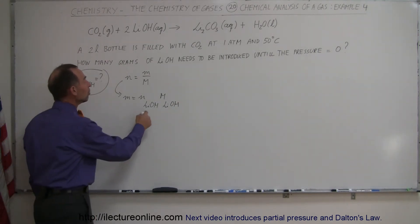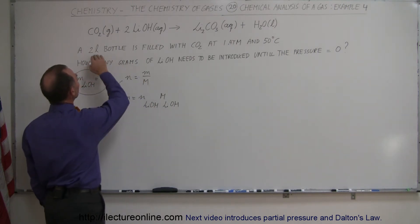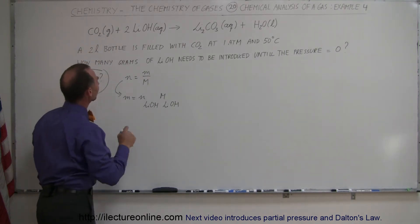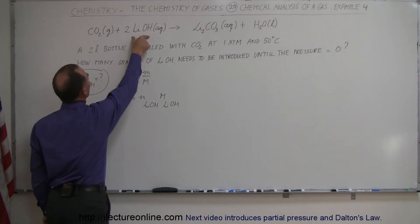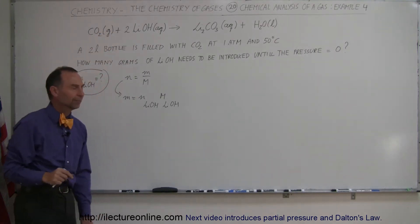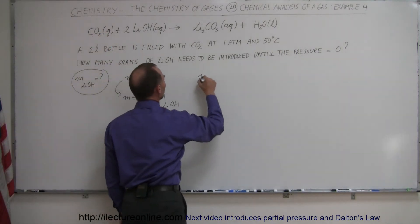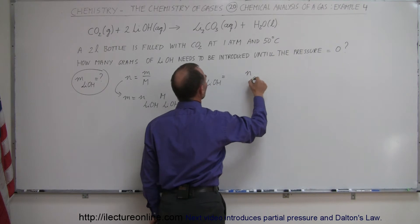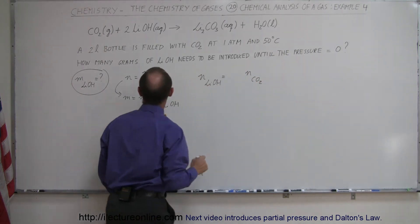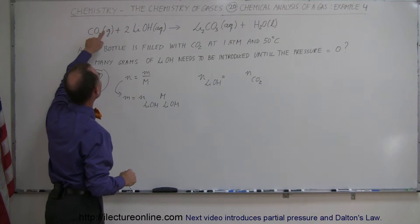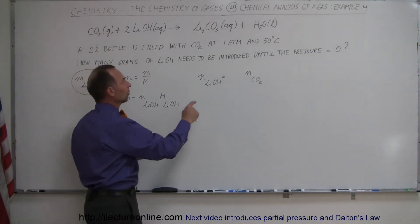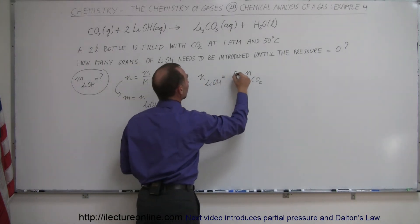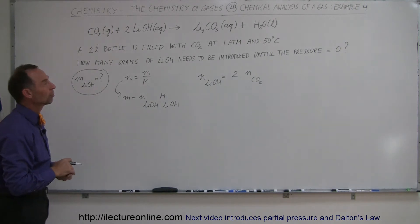We need to know the number of moles of lithium hydroxide, and since the information we have is in terms of carbon dioxide as one of the reactants, we have to compare the number of moles of lithium hydroxide to the number of moles of carbon dioxide. For each one mole of carbon dioxide, we need two moles of lithium hydroxide — a 2 to 1 ratio. So the number of moles of lithium hydroxide is two times the number of moles of carbon dioxide.